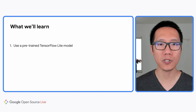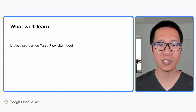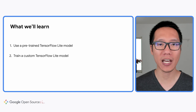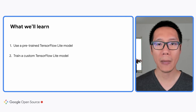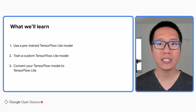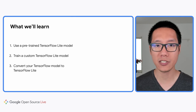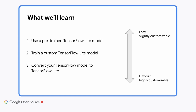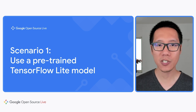We'll cover three scenarios. First, I'll show you how to use a pre-trained TensorFlow Lite model to add on-device machine learning to your applications in just a few minutes. Second, I'll show you how to train a custom TensorFlow Lite model to implement use cases not supported out of the box by the pre-trained models. And finally, I'll show you how to convert TensorFlow models to TensorFlow Lite so that you can have the full power to customize your model. The first scenario is very easy but offers few options for customization, while the third offers a lot of flexibility but requires expertise.